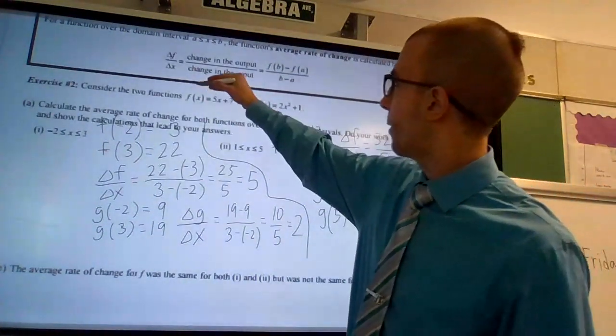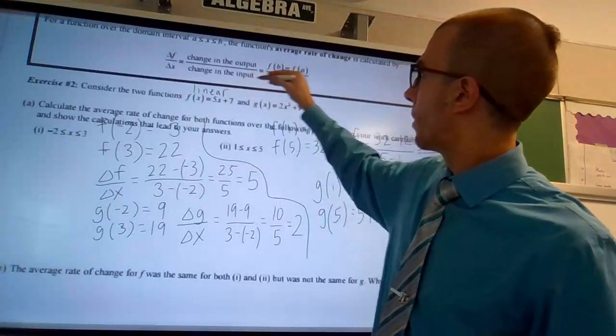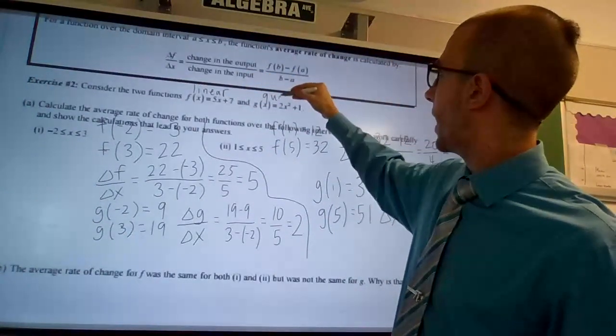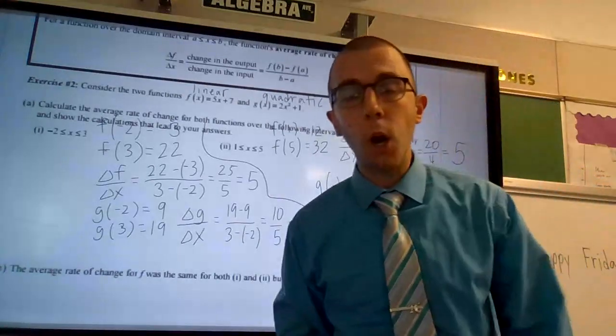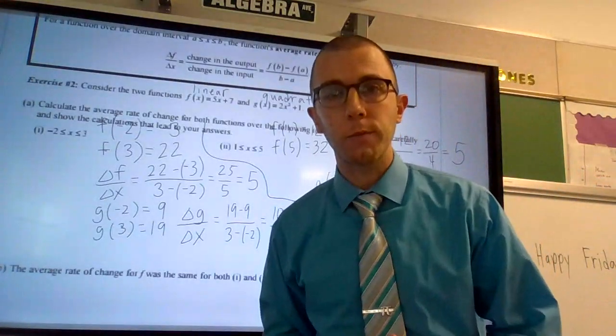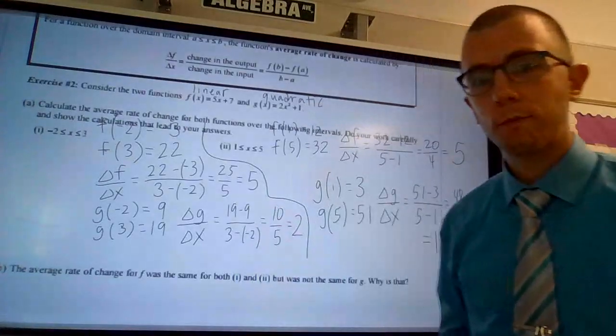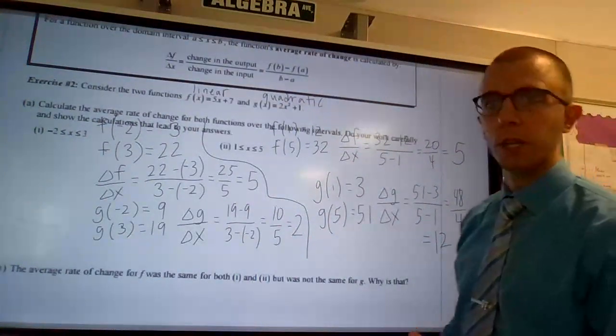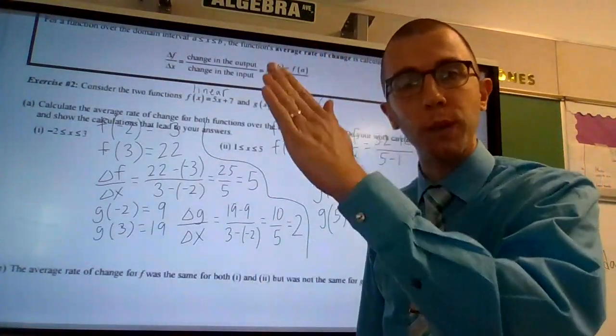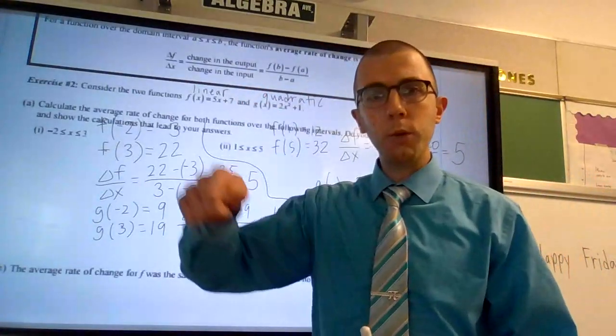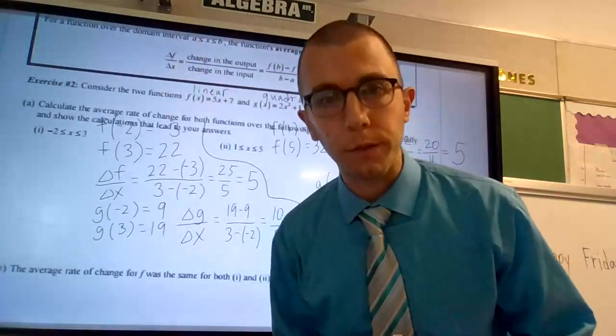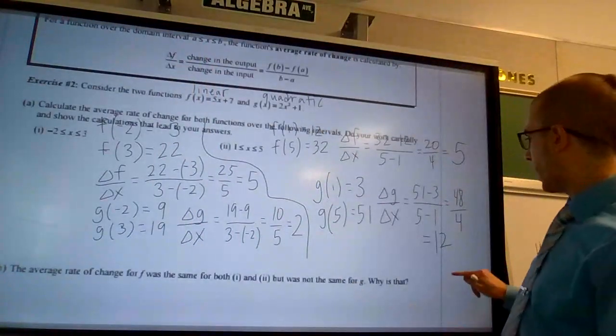Well, f of x would be linear. G of x is quadratic. And what do we know about linear functions? What do we know about linear functions? Why is a line perfectly straight? But a quadratic is a u-shaped, which curves. So why is a line perfectly straight?